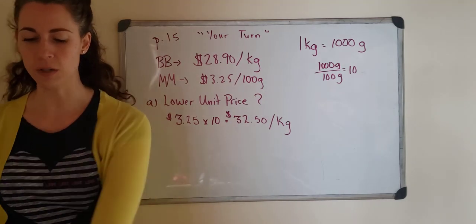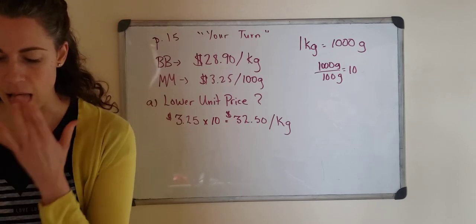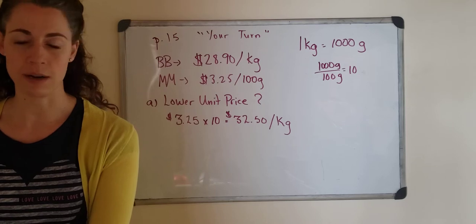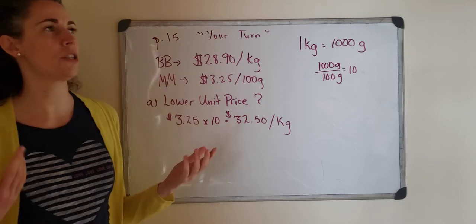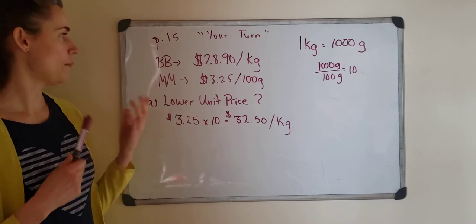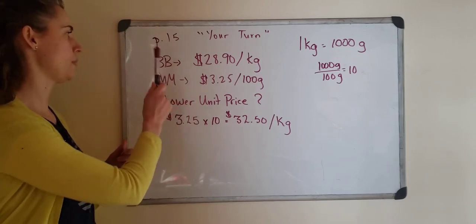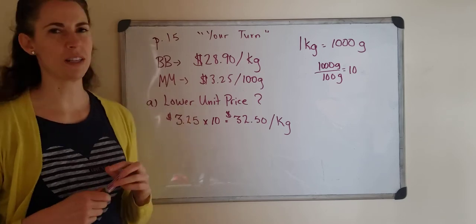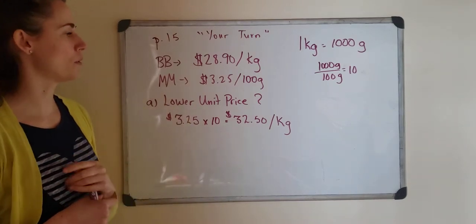Another way of thinking of unit price we did that in the previous chapter that was one of our definitions and it means the price for one unit of an item. In this case, what they're asking is if you bought the same amount at this beef butcher or the meat mart, where is it cheaper? What has the lowest unit price?